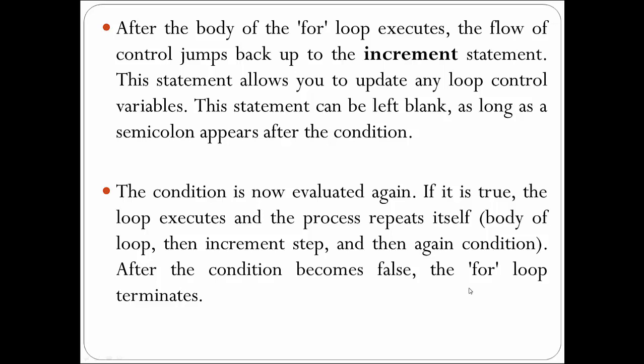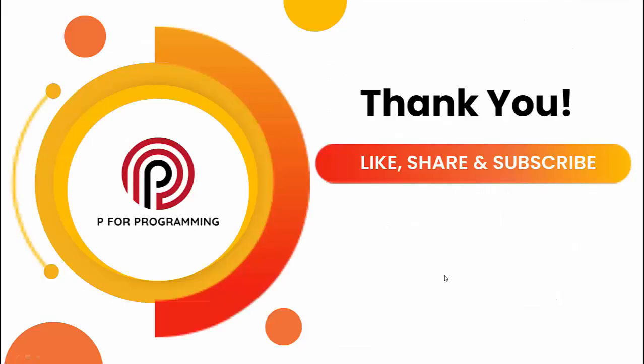This was all about the basics of loop control instructions and the concept of for loop. In the next lecture, we will see a C program to print digits 1 to 5 using a for loop. If you enjoyed this content, please like and share this video and subscribe to my YouTube channel, P for Programming.